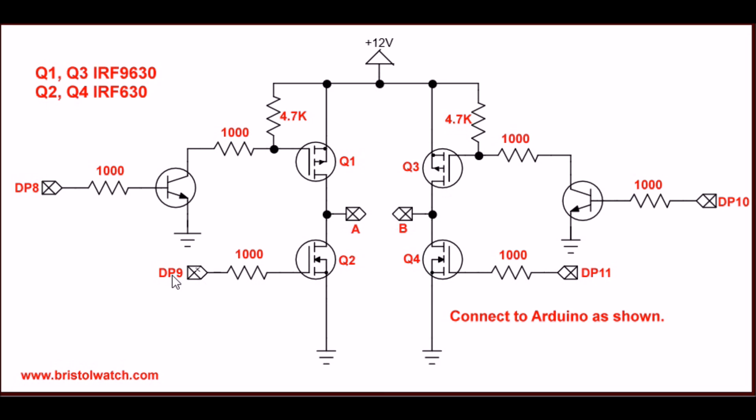How this works: you have to turn on digital pin 8 and digital pin 11 at the same time, and that creates a path through Q4 and Q1. Or, you have to cut on digital pin 9 and digital pin 10, creating a path through Q2 through Q3.